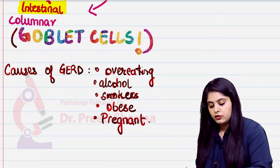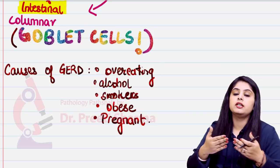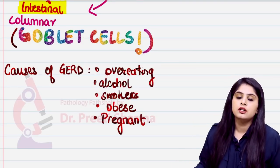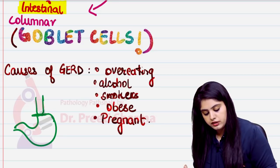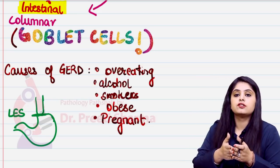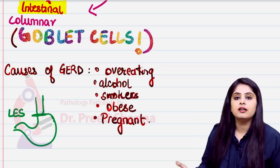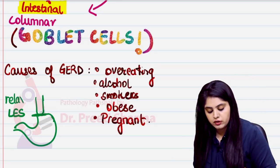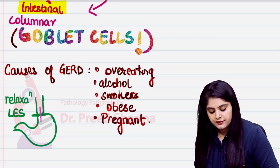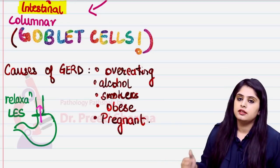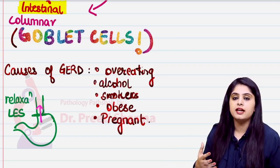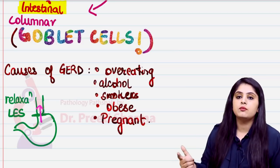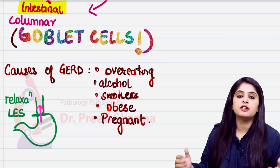Why is GERD seen in pregnancy and obesity? For something to reflux from the stomach back into the esophagus, the lower esophageal sphincter must relax. In obese individuals and in the third trimester of pregnancy, increased intra-abdominal pressure causes the sphincter to relax, allowing backflow.